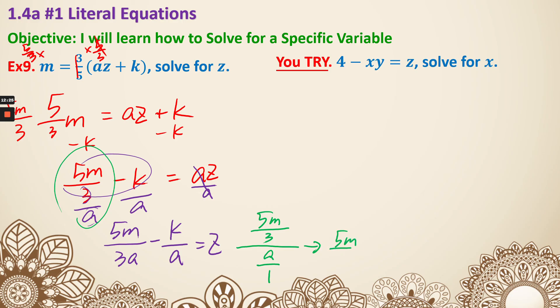That can be changed to 5m/3 multiplied by the reciprocal, which is 1/a. And you can see the 3 and a are both on the bottom, so it's 5m/(3a).